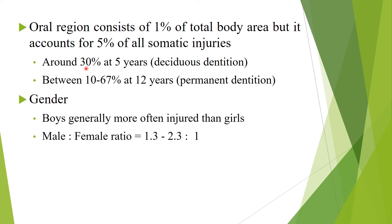Around 30% of children are affected at 5 years of age in the deciduous dentition. Between 10 to 67% are affected at 12 years in the permanent dentition. Regarding gender, boys are generally more often injured than girls, with a male-to-female ratio of 1.3 to 2.3:1, so males are slightly more commonly affected.